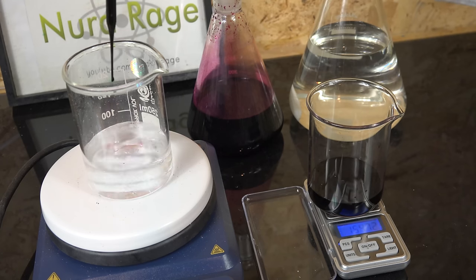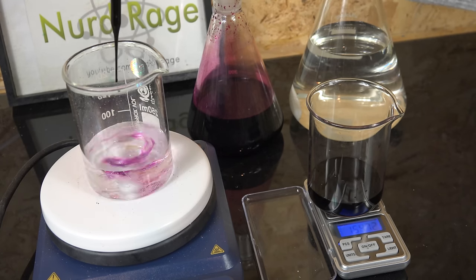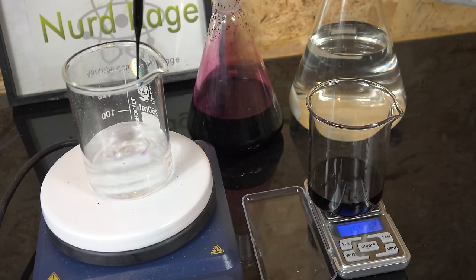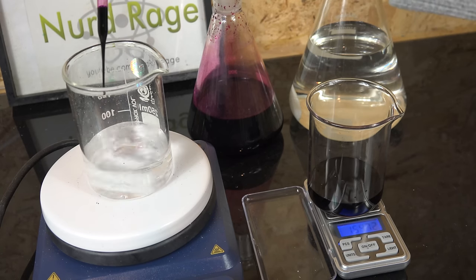Greetings fellow nerds. In this video we're going to use titration to find the concentration of hydrogen peroxide. After decades of experiments on this channel, we're finally going to do what most chemists are actually paid to do: analytical chemistry.